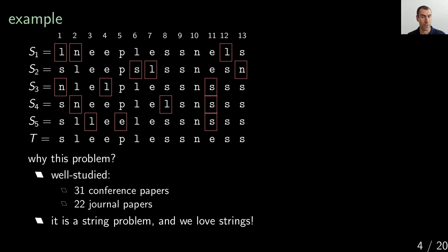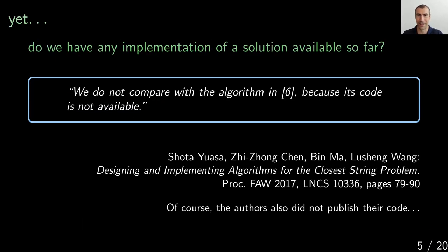Why is this problem interesting? There are more than two dozen papers in conferences and journals on it, and I love string problems. But if I want to solve it in practice, I need to find existing code. Looking at papers, one is very interestingly written in that for experiments they tried to compare with another algorithm, but because its code was not available they couldn't — and unfortunately, that paper's authors also didn't publish their code.